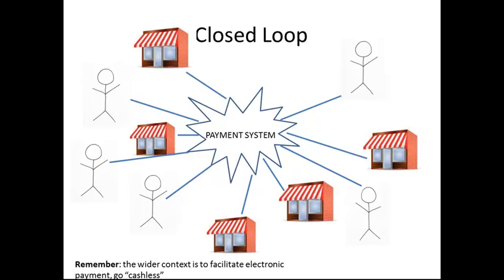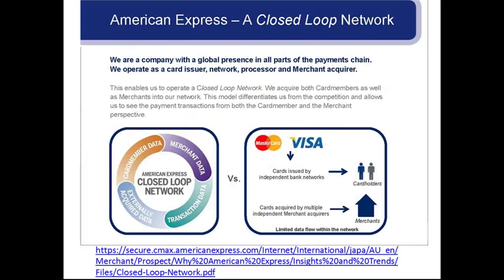One of the biggest and most familiar closed-loop payment systems is American Express. You might think of this as open-loop because you can use your American Express card pretty much anywhere, but you'll find there are some merchants that just don't accept it because the merchant hasn't yet been enrolled into the system. This slide is from a corporate presentation by Amex explaining what they see as the benefits of their system. They proudly tout that they're a closed-loop network. One of their chief principles is that by being closed-loop, they have all the card member data, all the merchant data, all the transaction data, and any externally acquired data involved in that transaction — they know everything going on for their consumers and merchants.